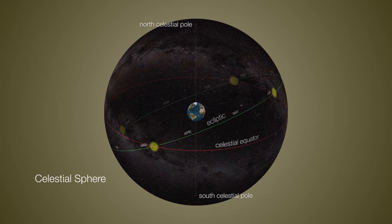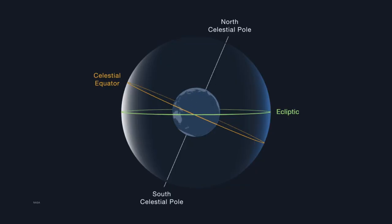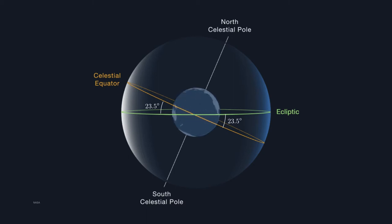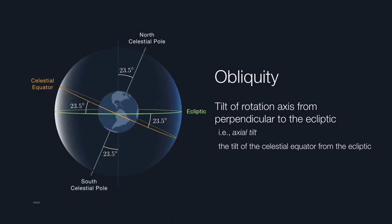Now let's just change our perspective slightly. Instead of letting the celestial equator be parallel to our screen, we'll tilt this so that the ecliptic is parallel to our screen. We can envision the Earth rotating on its axis, tilted slightly with respect to the ecliptic. The celestial equator and the ecliptic are tilted by about 23.5 degrees — closer to 23.4 degrees in real life, but this is close enough. That also means the north celestial pole is tilted by 23.5 degrees from a line perpendicular to the ecliptic. This axial tilt of Earth has a name: we call it the obliquity of Earth, more commonly known as axial tilt.